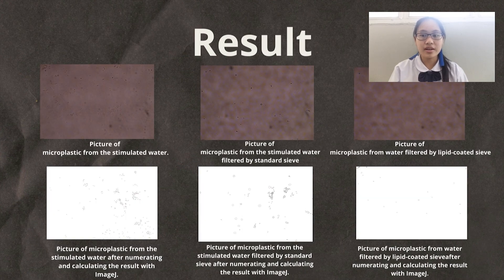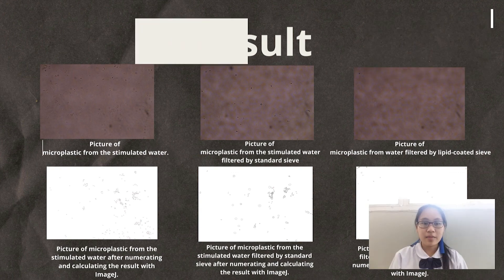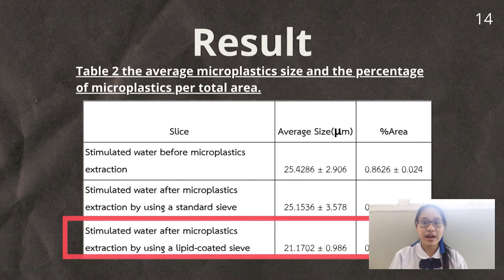The next slide is the results. The two pictures on the left are images of microplastics from the simulated water. In the middle are pictures of microplastics from the simulated water filtered by a standard sieve. On the right are pictures of microplastics from simulated water filtered by a lipid-coated sieve. The images above were taken with a microscope, and the images below were analyzed by ImageJ. This table shows the average microplastic size and the percentage of microplastics per total area.